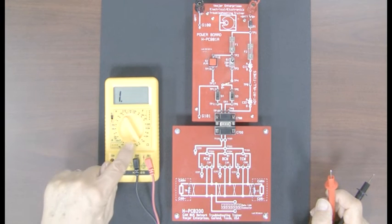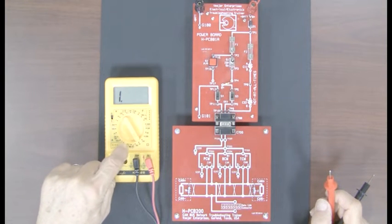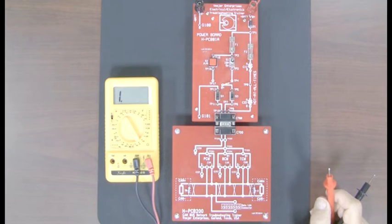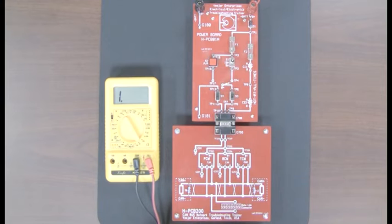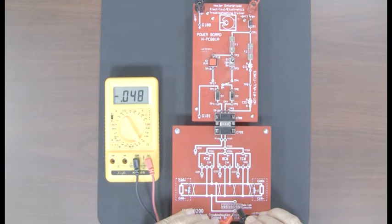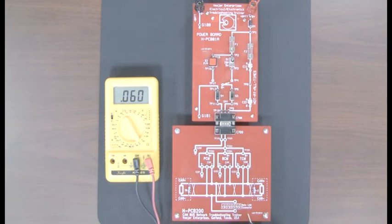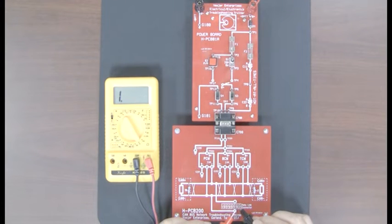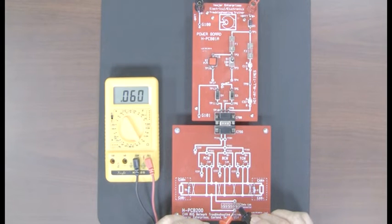Notice that I've set to the resistance range, and I've selected 2k ohm resistance range. Now the reason for that is that when I measure between 6 and 14 on the DLC, I'm going to see 60 ohms, as you see here. I'm measuring right there on the DLC, pin 6 and 14, and I see 60 ohms.